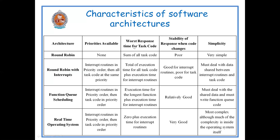The next characteristic is worst case response time for the task code. In round robin, all tasks are given the same importance, so the worst case response time is the sum of execution times of all the task code. This is because in the continuous loop, each and every task is given service, so in the worst case all devices require service simultaneously.